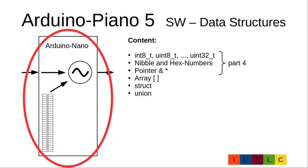In Part 4 I explained the integer types, what a nibble is, how hex numbers look, the use of pointers, and how pointer arithmetic works. Today we continue with the C and C++ data structures: Array, Struct, and Union. Arrays are used to store a lot of equal data structures. Struct is used to combine different data structures into one bigger data structure. And Unions are used to overlay different data structures.